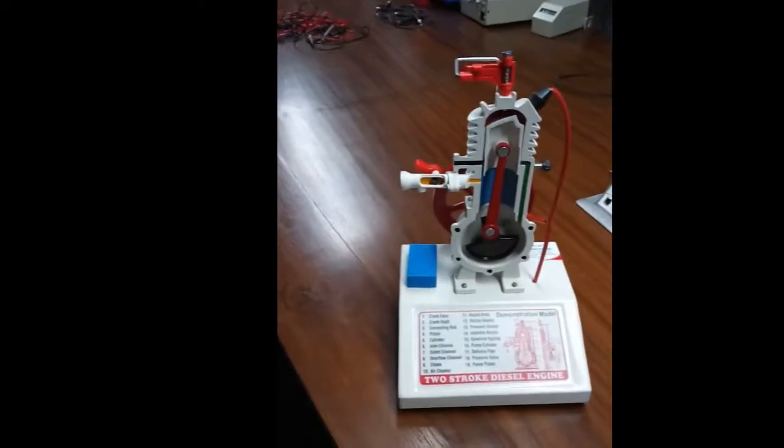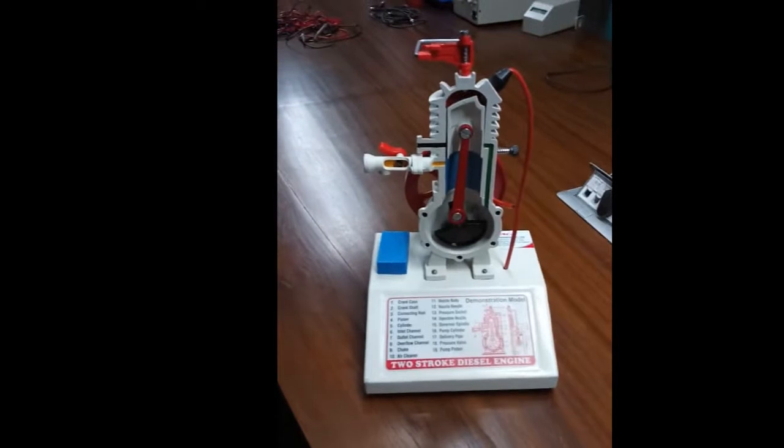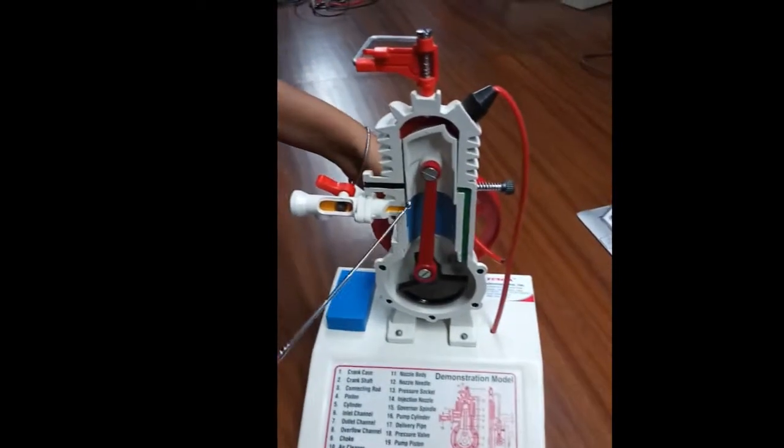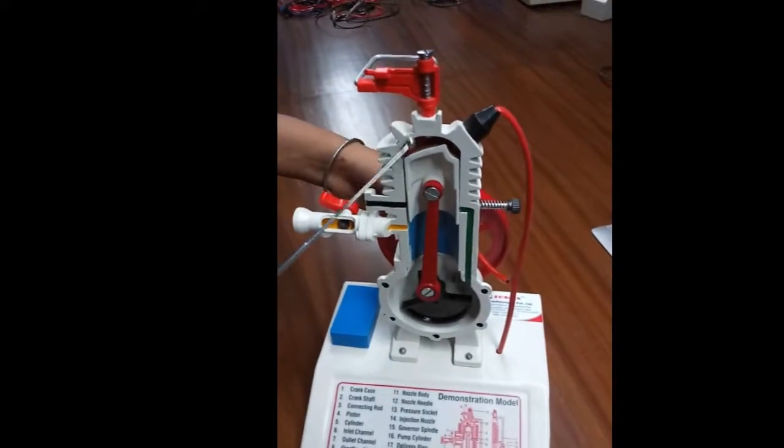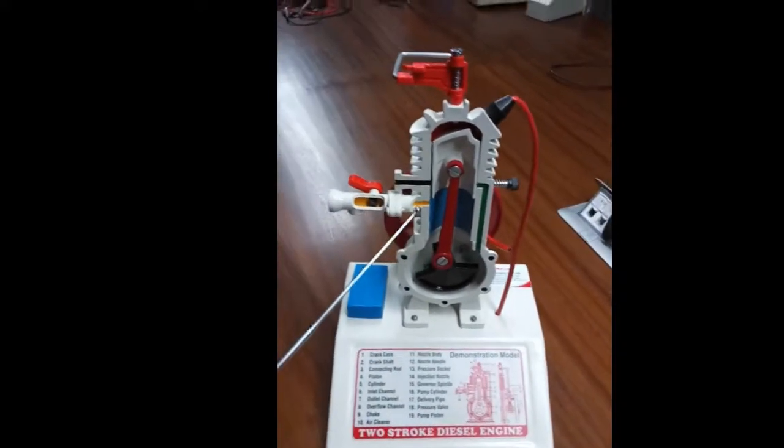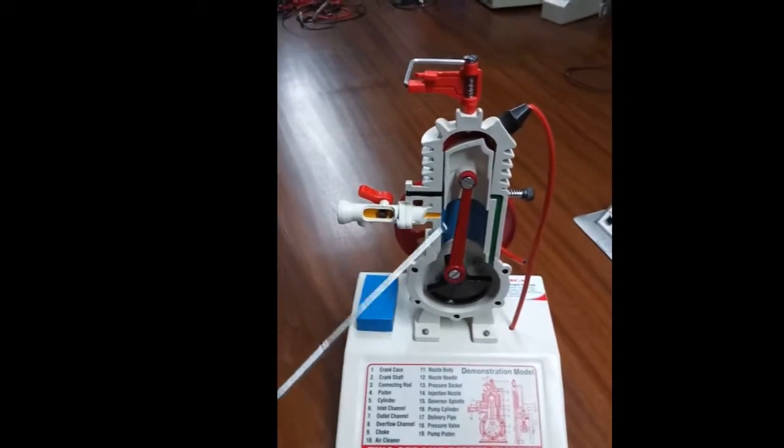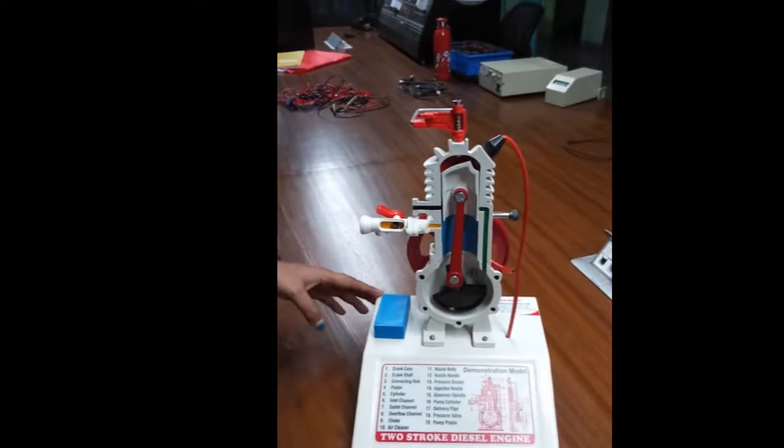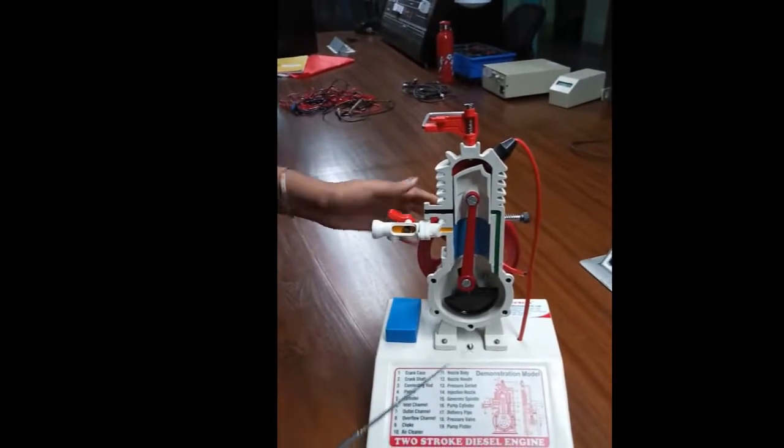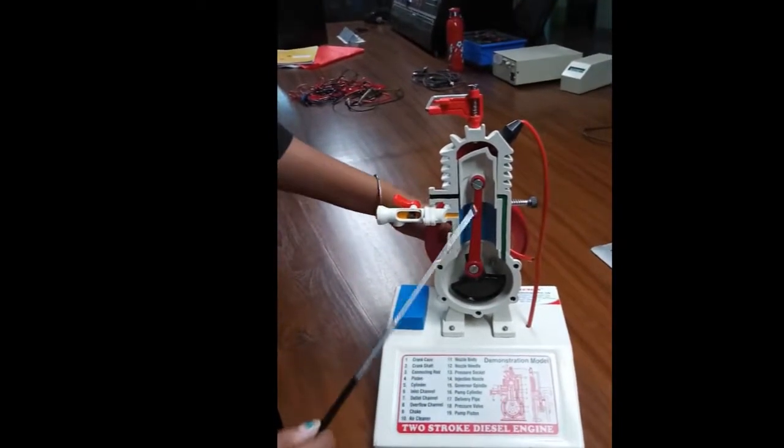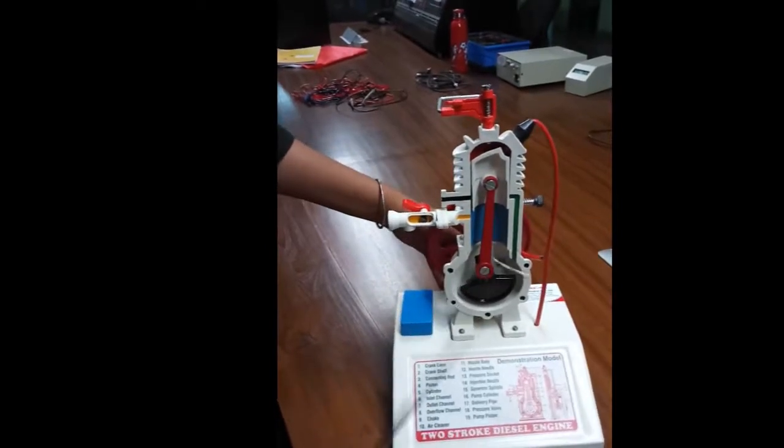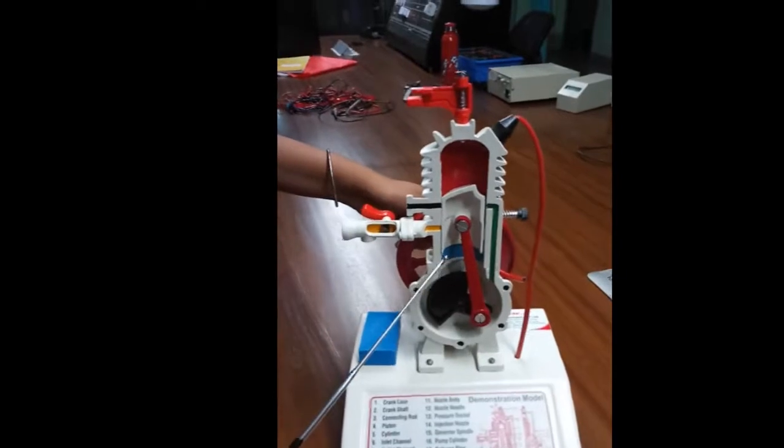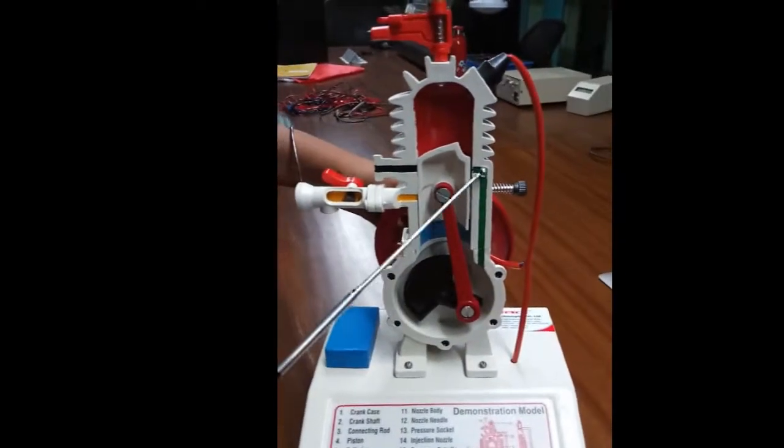In these two strokes, it completes four cycles: intake, exhaust, compression, and ignition. Now when the piston is at the top dead center, fresh air enters into the crankcase through this port. When the piston is moving downwards, the fresh air transfers through this port.